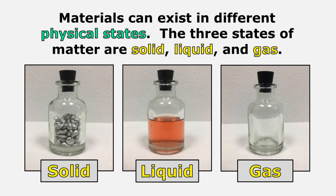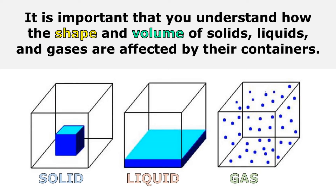Materials can exist in different physical states. The three states of matter are solid, liquid, and gas. When we talk about the physical state of a substance, we're talking about whether it's a solid, a liquid, or a gas. It's important that you understand how the shape and volume of solids, liquids, and gases are affected by their containers.